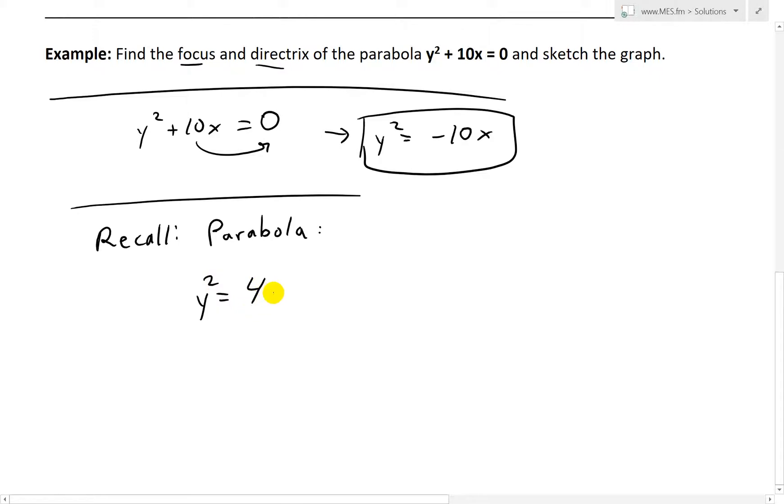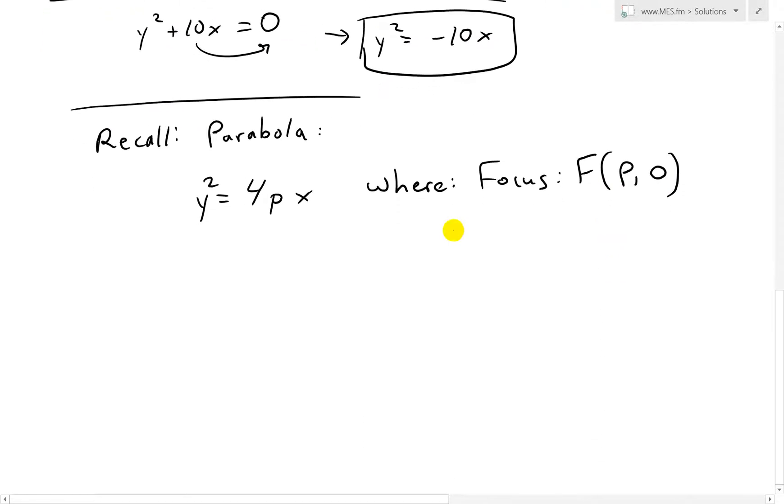Where we have the focus, and it is at the point, we'll call this F, and it's at (p, 0). So it's on the horizontal axis.